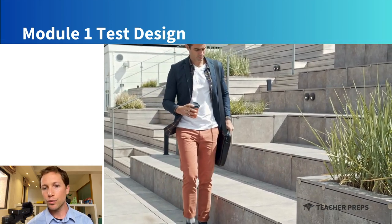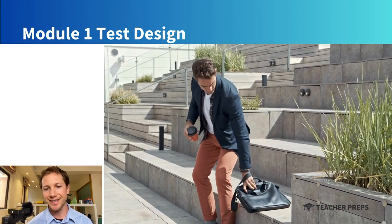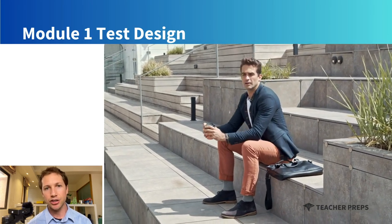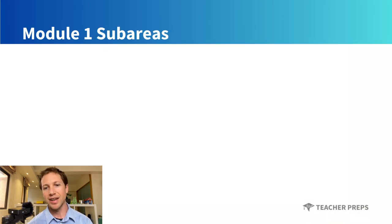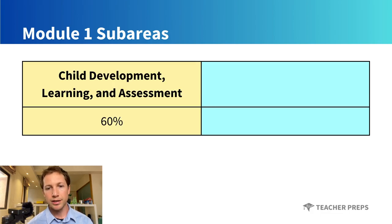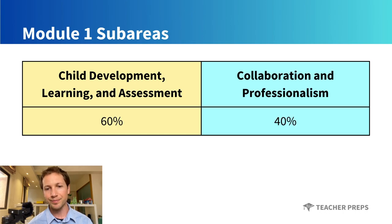You will also have 15 minutes to complete a testing tutorial prior to beginning your exam. Furthermore, if you're registered to take all three modules during a single test session, you will also have a 15-minute break between each module. Module 1's content areas are divided into two separate segments: number one, child development, learning, and assessment, worth 60% of your total Module 1 exam score, and number two, collaboration and professionalism, worth 40% of the Module 1 exam score.